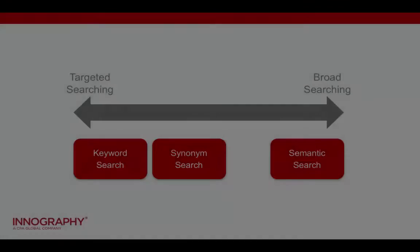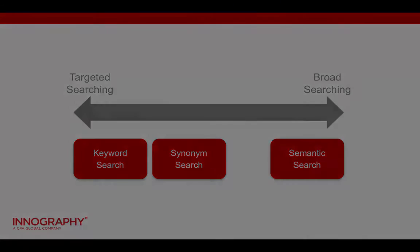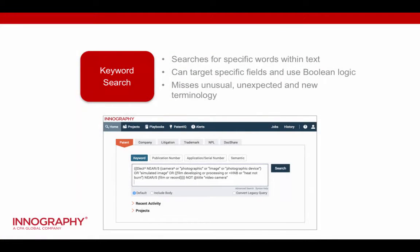In this video we're going to go through some different types of searches, because I've gotten many questions about the different types of patent searches and it can be a bit confusing. The first and foremost is keyword search. This obviously searches for specific words within the text of the patent document, and it can get pretty complex. You can target the searches against different fields of the document and use Boolean logic. The common factor with keyword searches is that it can miss unusual terminology, new terminology you don't expect, and as a result you can miss relevant patent documents.